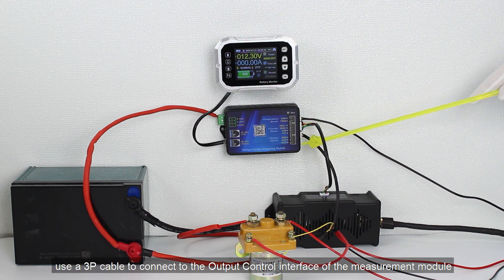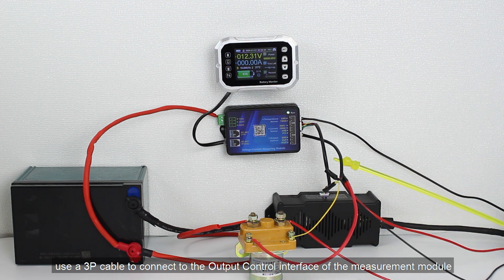Next, use a 3P cable to connect to the output control interface of the measurement module.